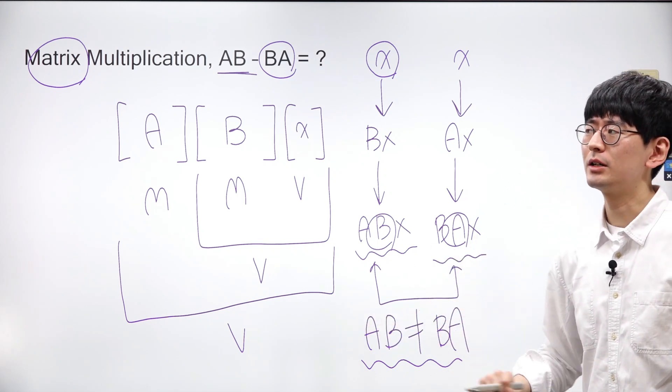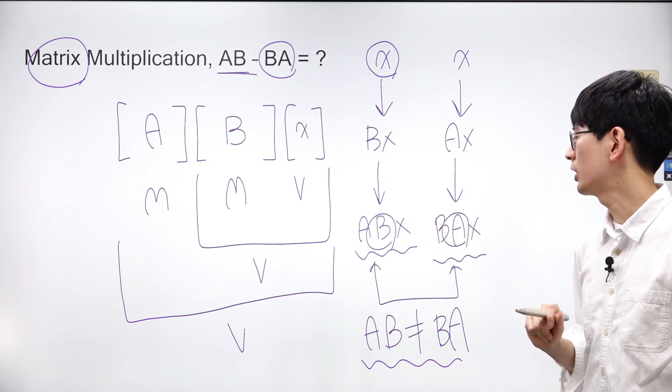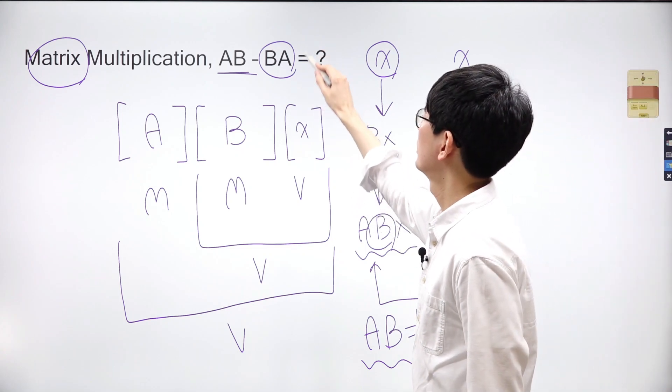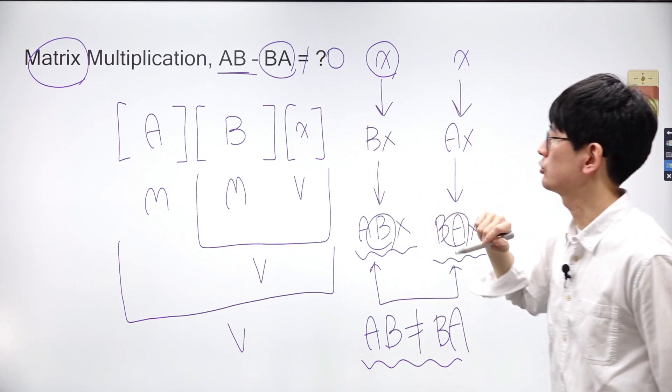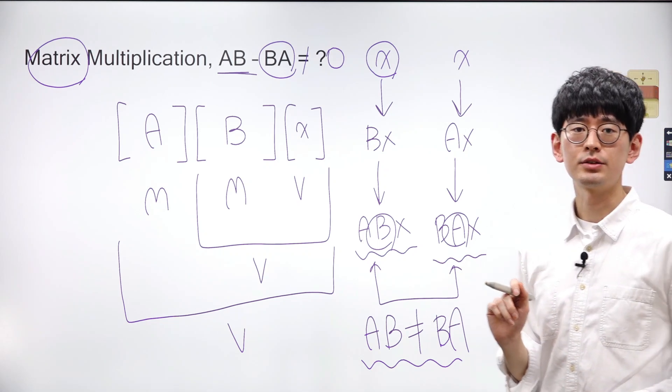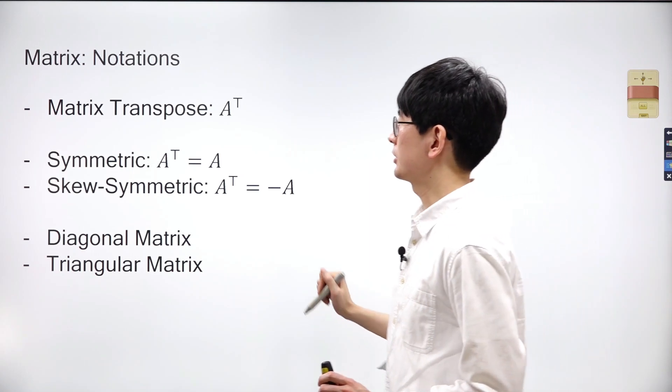Therefore, I want to emphasize that AB is not equal to BA, and AB minus BA does not always equal 0. As explained, the reason why the product of matrices varies depending on the order of matrices can be understood by examining the order of transformations applied to the coordinate space.